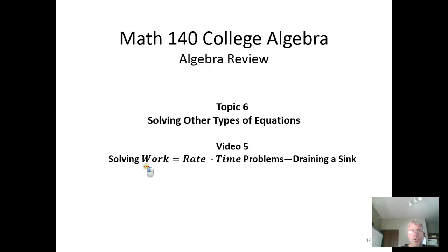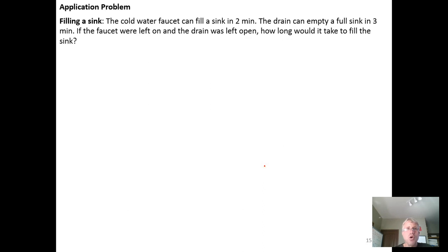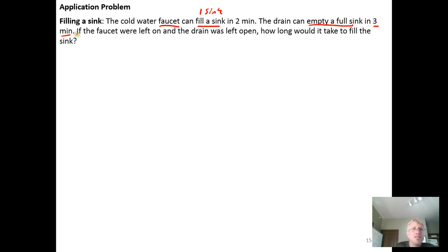In this video we're going to look at one more work equals rate times time example where we have a faucet and a drain working together to either overflow a sink or drain a sink. The cold water faucet can fill a sink in two minutes, the drain can empty a sink in three minutes, and if the faucet were left on and the drain was left open, how long would it take to fill the sink? There's a tension between the faucet and the drain — the faucet is trying to fill the sink, the drain is trying to empty it.